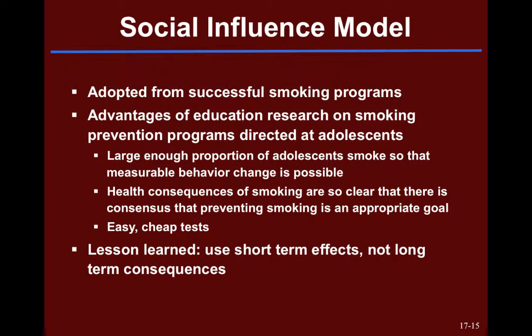Welcome back. We're here to talk about the fourth and fifth of our school-based intervention program models. The fourth one is the social influence model. When we use it for substance abuse and use prevention, it actually began with successful anti-smoking programs — very solid, evidence-based, research-developed anti-smoking programs directed at teens.